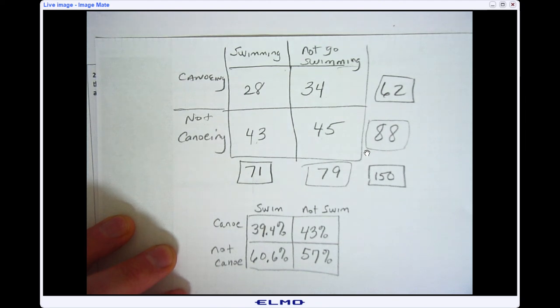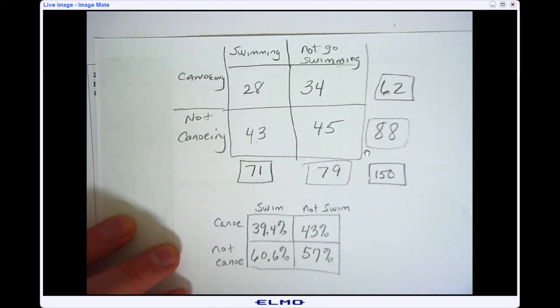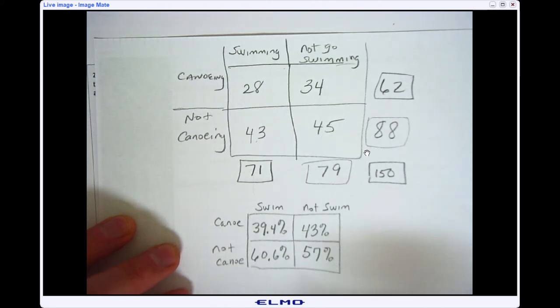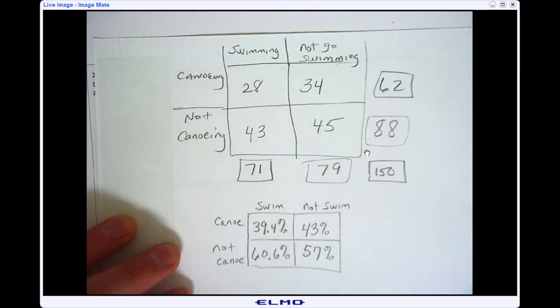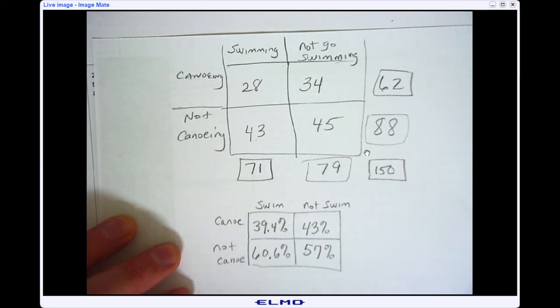Now, in our last lesson, we talked about association for two-way tables. And when you look at the numbers, these are really close to each other. So this is a really weak association. If they were further apart, then there would be a stronger association, meaning there's some kind of bigger connection. But right now, between canoeing and swimming, there isn't that much of a discrepancy between the two.